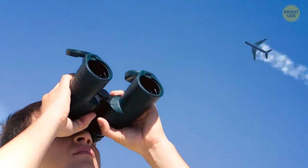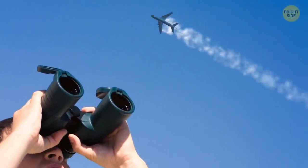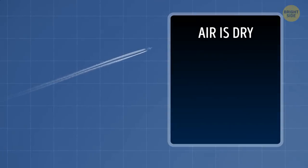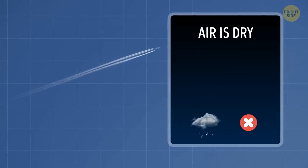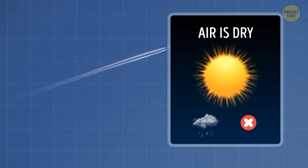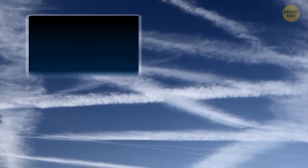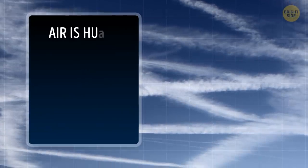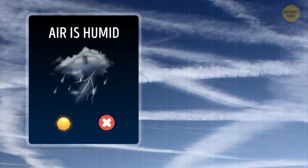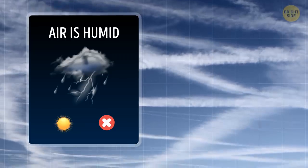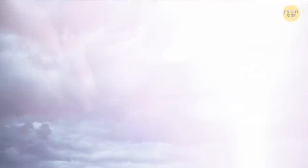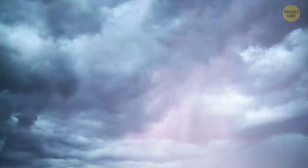Look at a contrail attentively, and you might be able to predict the weather. If the contrail's thin and short-lived, the air at high altitudes is dry — it's not going to rain, and the weather's going to be just fine. But if you see a thick contrail that stays in the air for a long time, bring along your umbrella. The air is humid high above your head — it's an early sign of an upcoming storm.